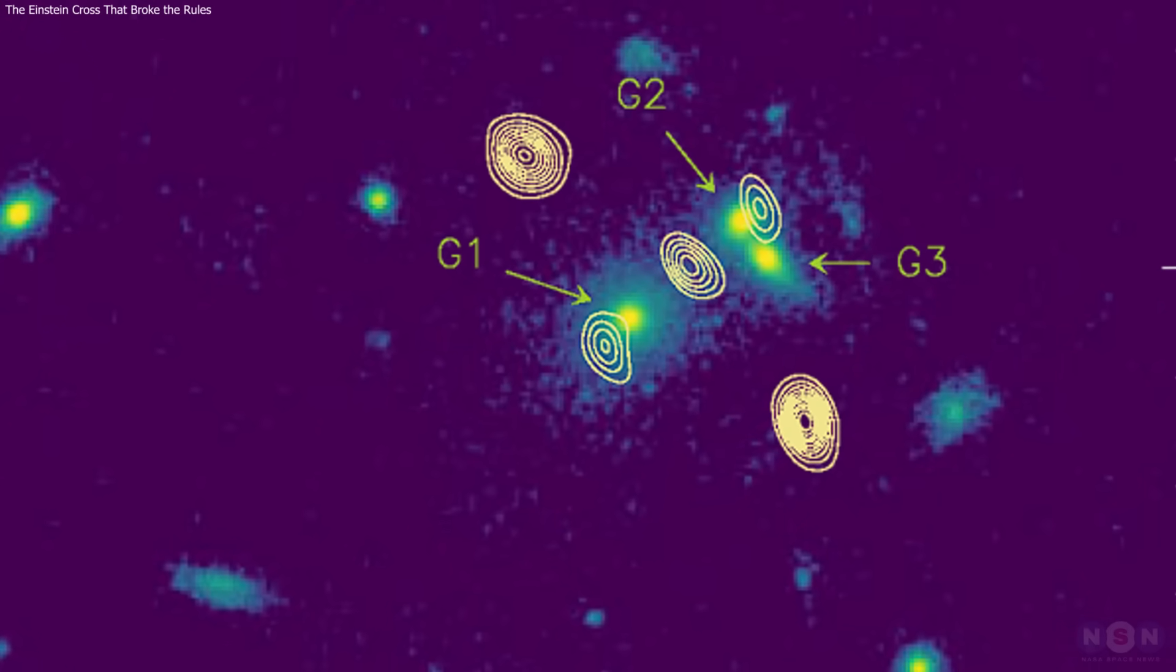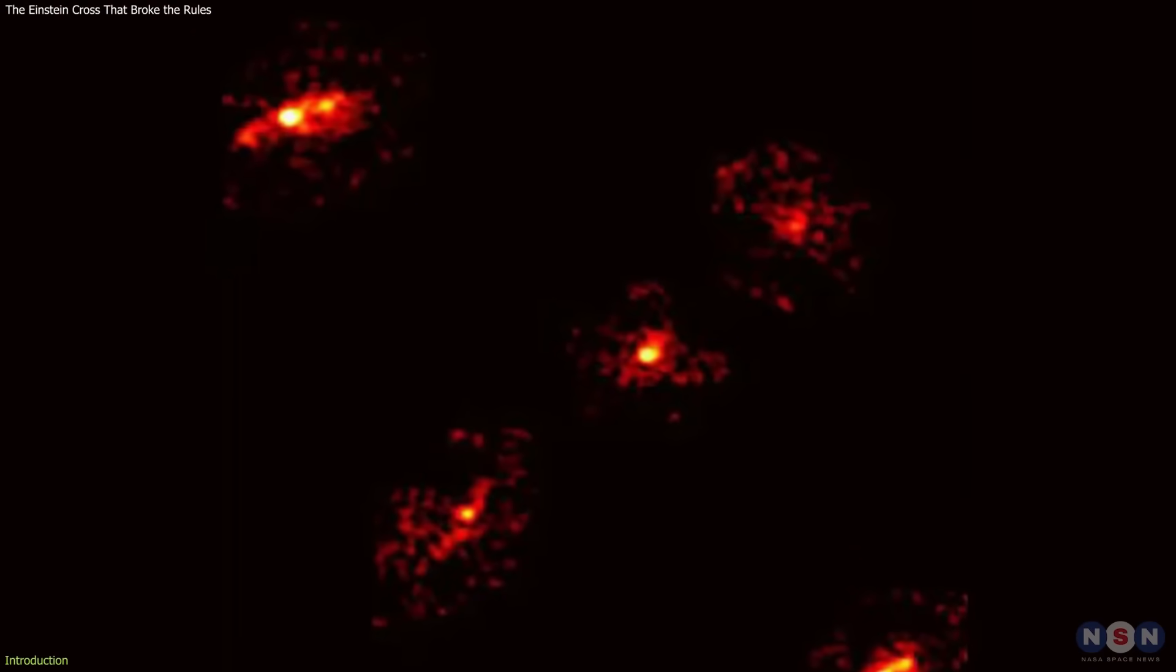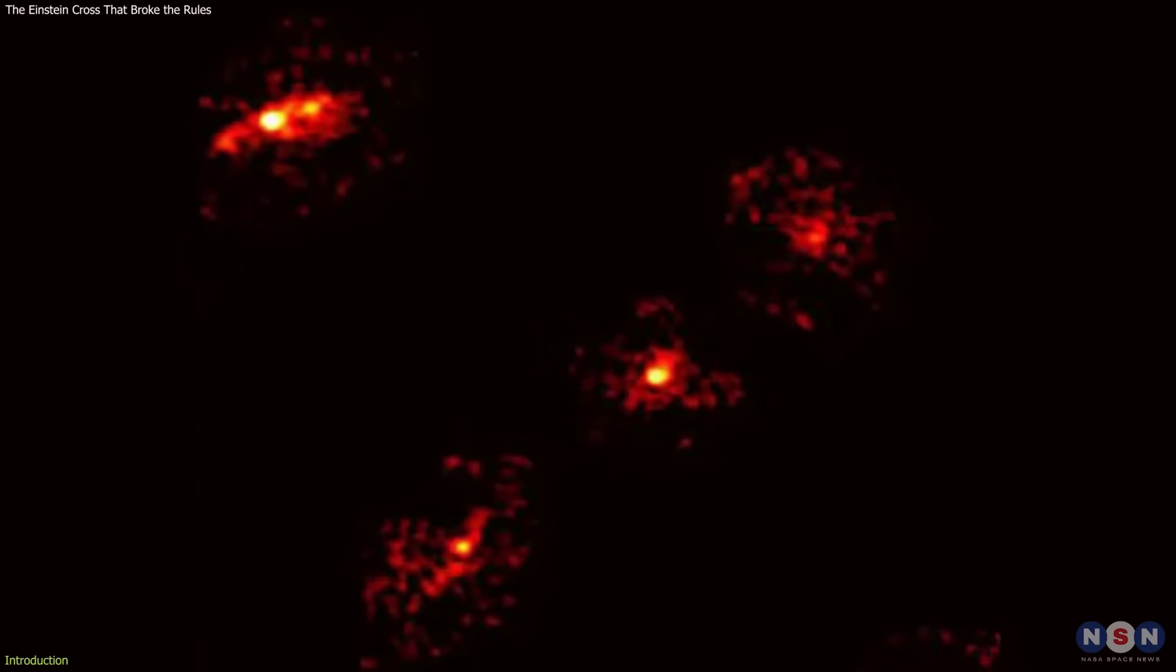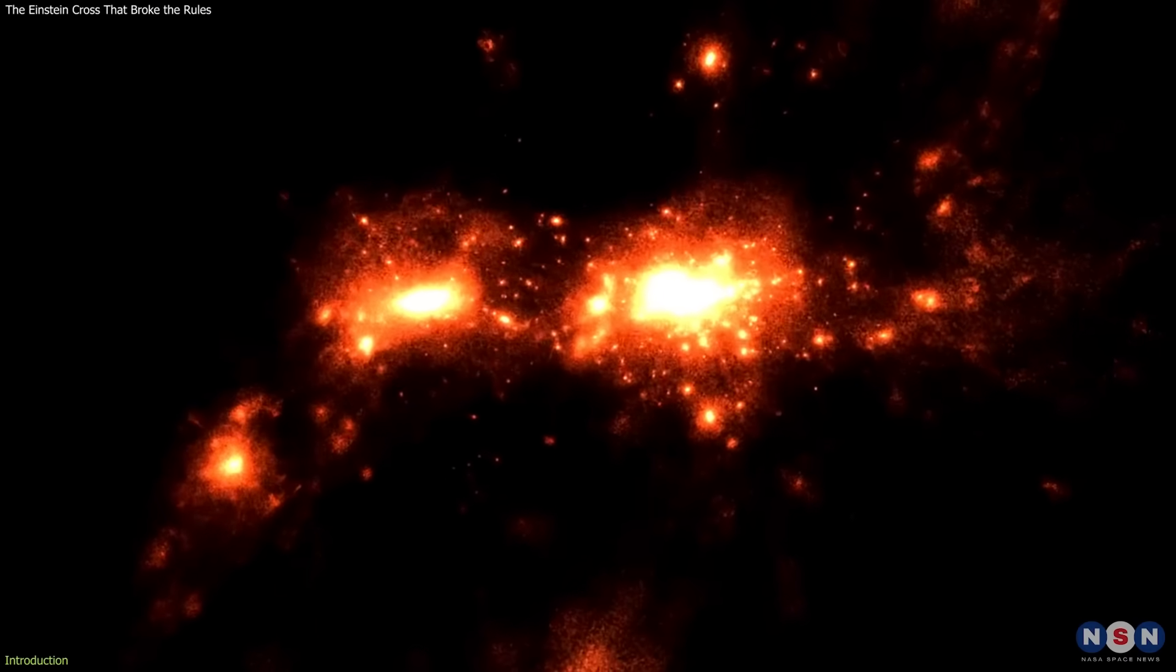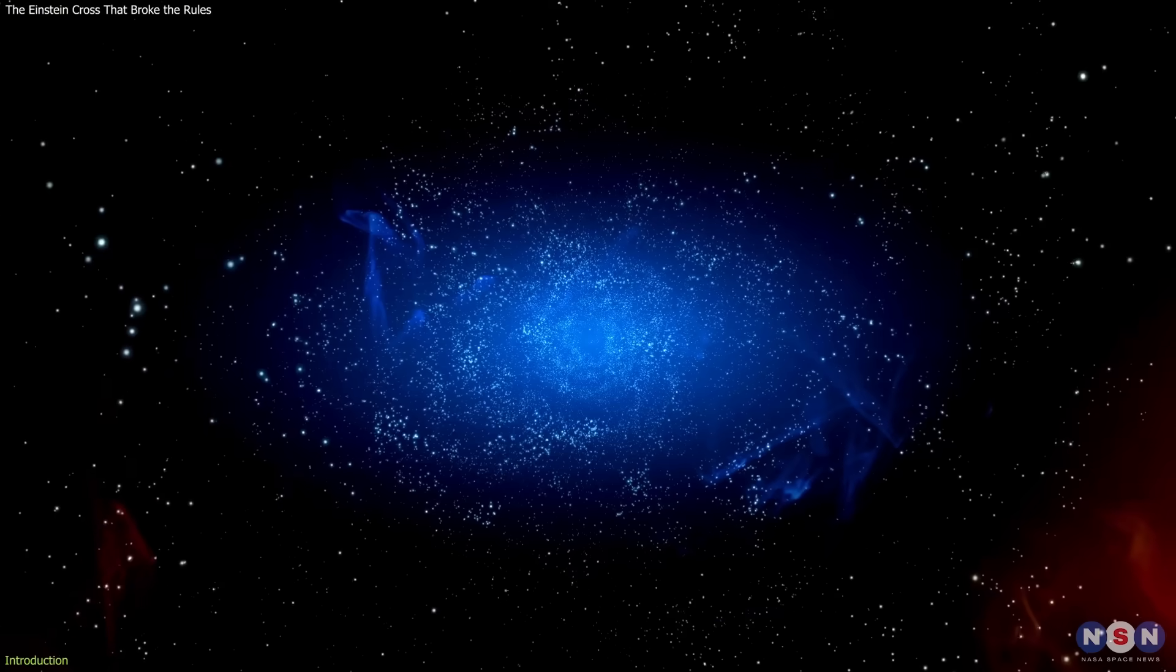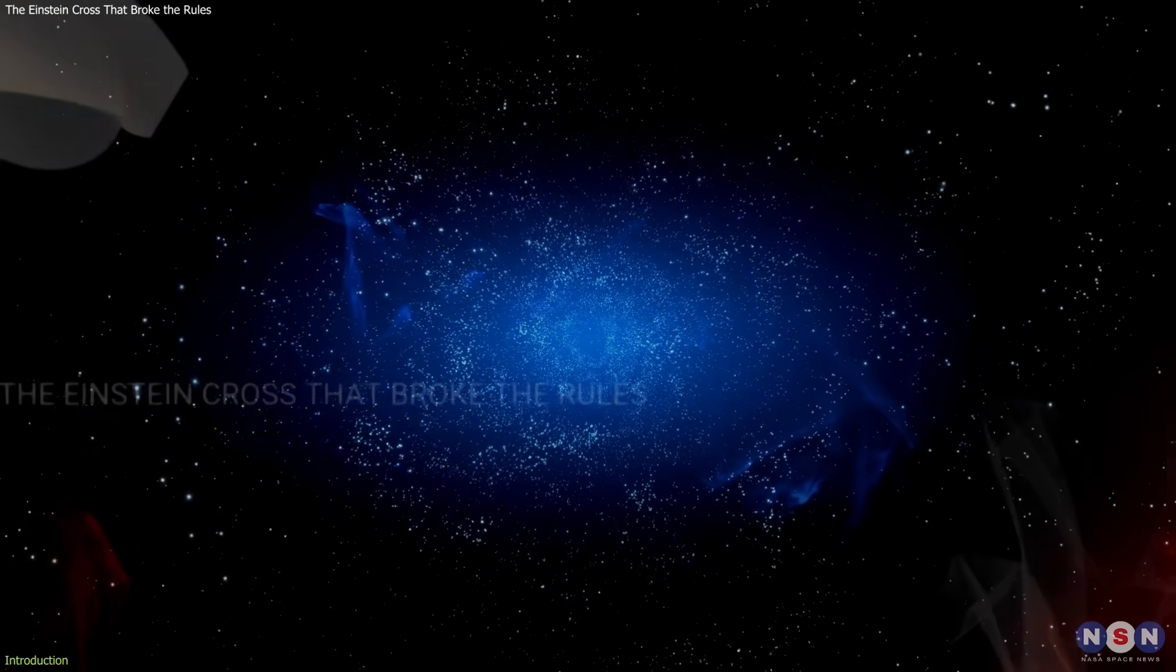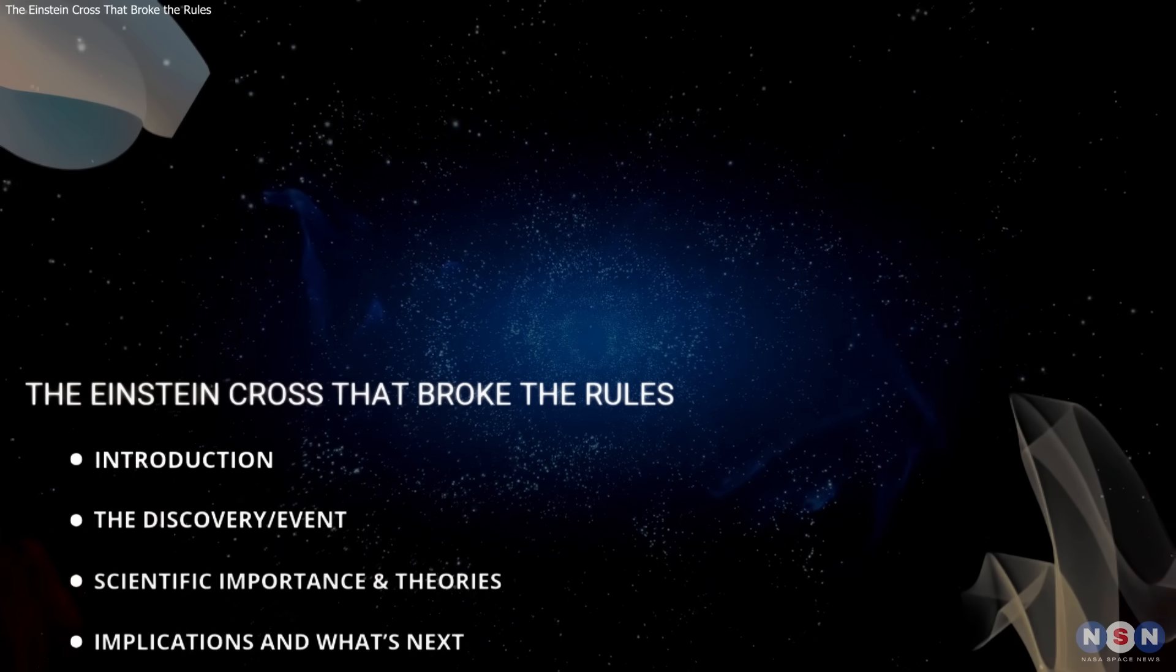Astronomers studying a rare Einstein cross found something they never expected: a fifth image that shouldn't exist. It turned out to be the mark of a hidden dark matter halo, giving us a new way to study the invisible mass shaping our universe. In this video, we'll break down how this discovery was made and why it matters.